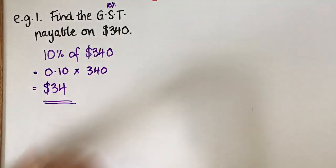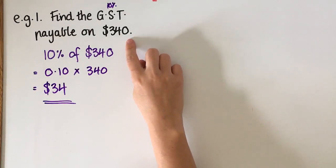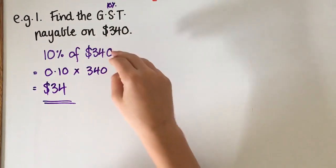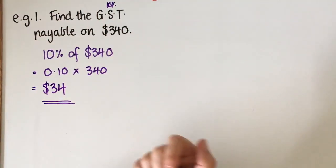Okay, so if I bought this stereo for $340, $34 is what's going to the government and the rest of it would go to the shop or the supplier or whatever.